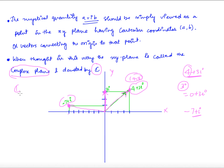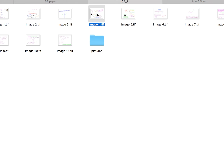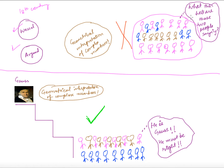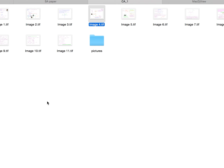When Wessel and Argand introduced this geometric interpretation at the end of the 18th century, people did not agree with them and rejected it. But Gauss was at the height of his career with a big reputation as a mathematician. When he said that a geometrical interpretation of complex numbers should exist, everybody agreed — and so complex numbers were finally accepted as valid mathematical objects.